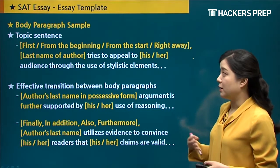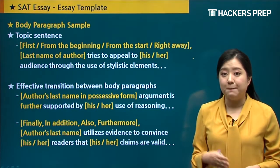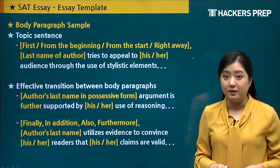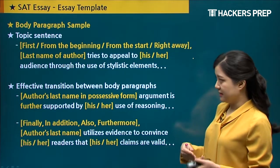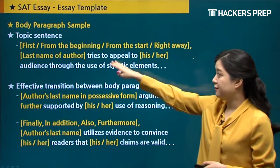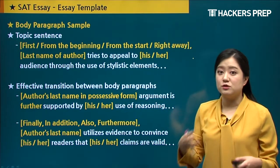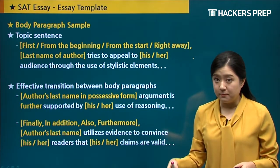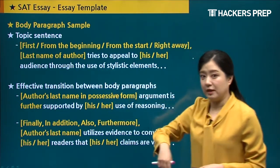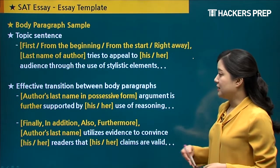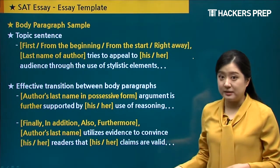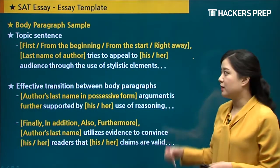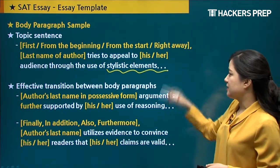Let's look at what a body paragraph sample would look like. The topic sentence is very important — you need a strong first sentence that summarizes everything you're going to write in that paragraph. For your first body paragraph, let the reader know it's the first paragraph by using transitional phrases like 'first,' 'from the beginning,' or 'right away.' Then use the last name of the author — since you stated the full name in the introduction, you can use just the last name — and write something like 'tries to appeal to his or her audience through the use of stylistic elements' (or evidence or reasoning, depending on the technique).